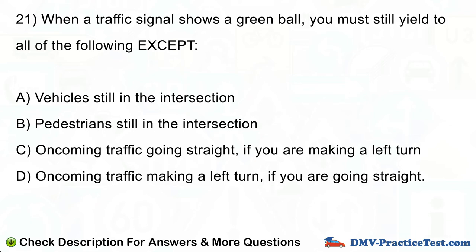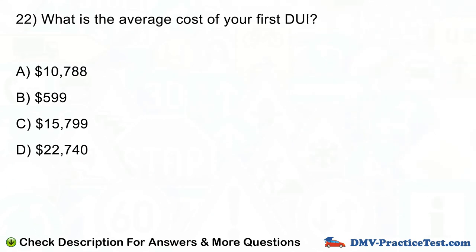Question number 22. What is the average cost of your first DUI? A. $10,788. B. $599. C. $15,799. D. $22,740.